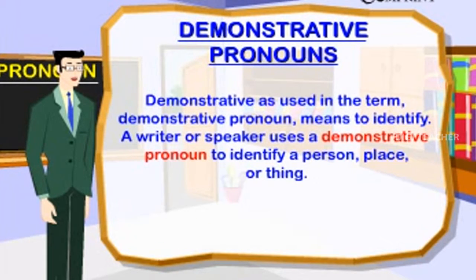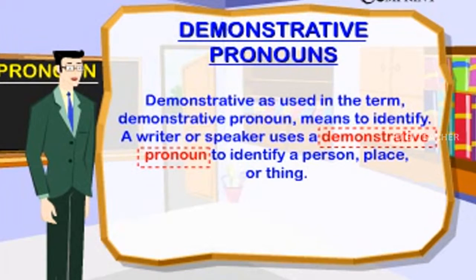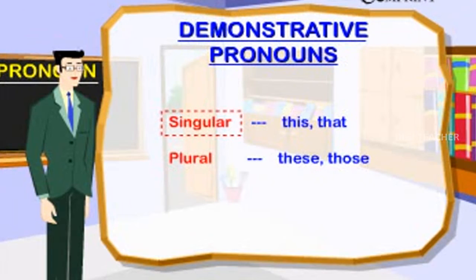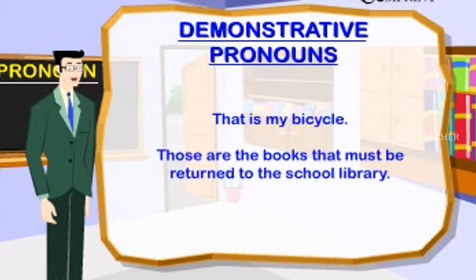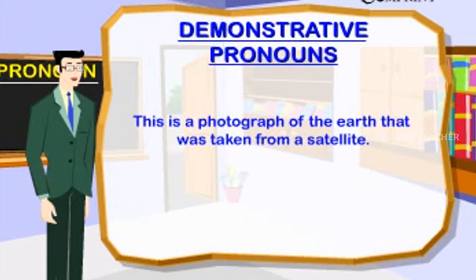Demonstrative pronouns identify a person, place, or thing. Singular: this, that. Plural: these, those. Examples: 'That is my bicycle.' 'Those are the books that must be returned to the school library.' 'This is a photograph of the earth taken from a satellite.'